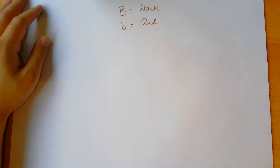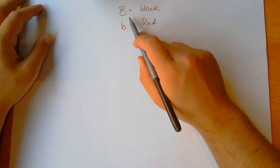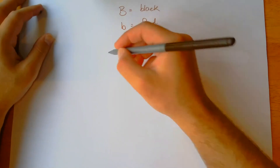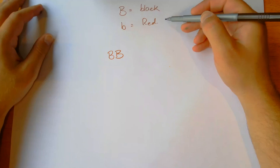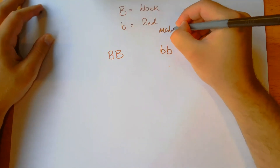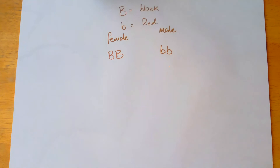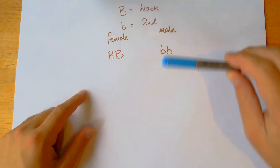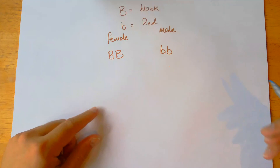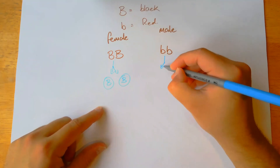The question asks us to draw a genetic diagram showing a cross between a pure breeding female with a black coat and a pure breeding male with a red coat. A pure breeding female with a black coat will have two dominant alleles — big B, big B. A pure breeding male with a red coat will have two recessive alleles — little b, little b. We've got our female genotype, our male genotype, and our phenotypes: black coat and red coat. During meiosis, the female splits into two dominant alleles, and the male into two recessive alleles.